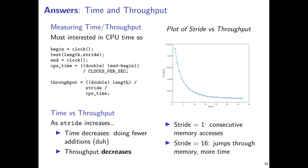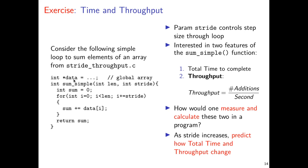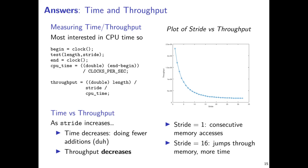Throughput is going to change as stride changes. To calculate it, use something like the clock function. Call the function with a particular stride, record CPU time immediately before and after, then use the formula to calculate total CPU time in seconds. Divide the number of additions — which is the length divided by the stride — by the CPU time, and you have throughput in additions per second.